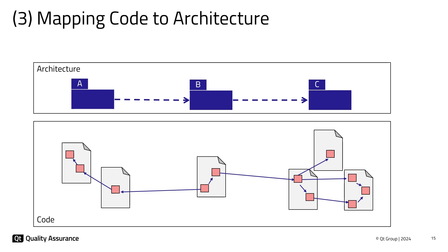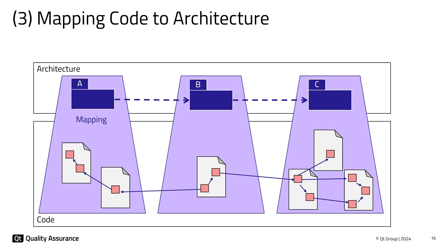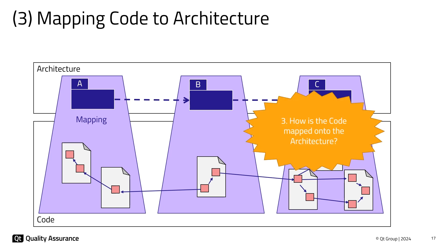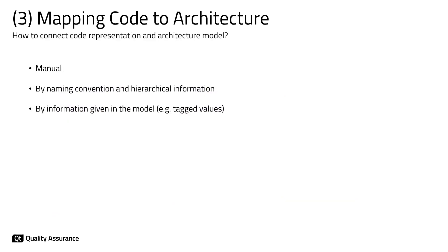We have an architecture model and a code model. We now have to establish how code elements correspond to architecture components. This is done by a mapping — an assignment of code elements to architecture elements. There are different ways of mapping code to architecture, and the correct way for your project depends on the project structure and on your architecture model. You can maintain a mapping manually using the Gravis Modeler. But the Axivian Suite also provides means to use naming conventions or hierarchical information to get a mapping automatically. You can also use tagged values in your model to specify how the mapping should look.